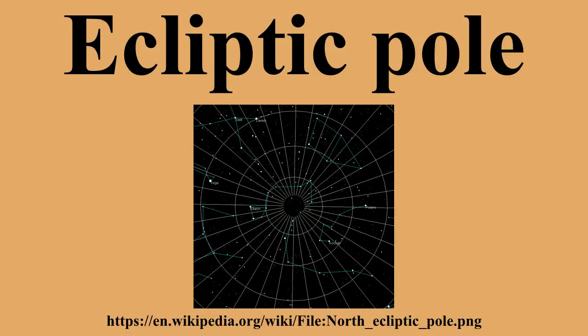As a consequence of the Earth's axial tilt, it is not possible to have the ecliptic poles at the zenith in a dark sky.